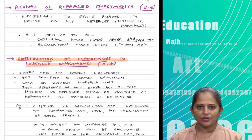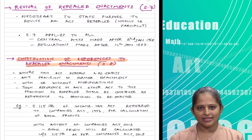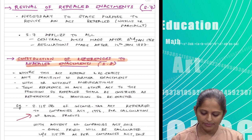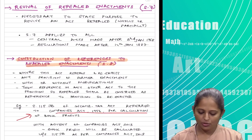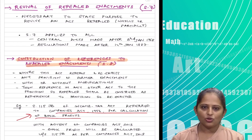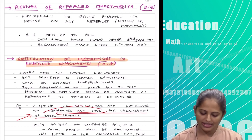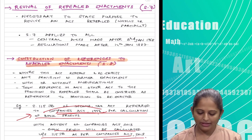Construction of references to repealed enactments: sometimes when looking at a particular enactment you will see a reference to another act. A simple example is section 115JB of the Income Tax Act, where book profits are calculated. It says you have to refer to the Companies Act 1956, but that act has been repealed. Nothing changes in the Income Tax Act to say Companies Act 2013, but whenever the referenced act is repealed and a new act comes into place, the calculation will be made as per the new act.